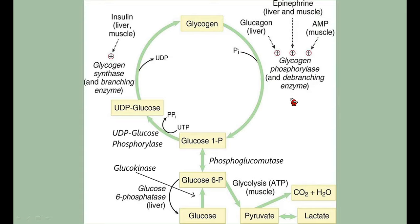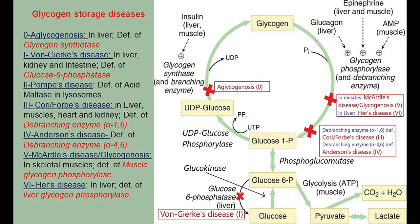Glucose-1-phosphate is converted to glucose-6-phosphate by phosphoglucomutase. In the liver, glucose-6-phosphatase converts glucose-6-phosphate back to glucose. Glycogen storage diseases result from deficiency of specific enzymes. Glycogen storage disease type 0 is due to glycogen synthase deficiency — glycogen is not synthesized, so there is no accumulation, which is why it is numbered zero.